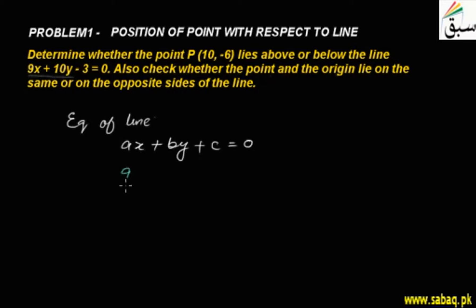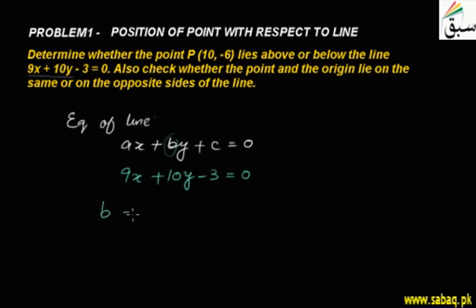The given equation is 9x + 10y - 3 = 0, which is in the same general form. Comparing coefficients, A = 9 and B = 10. The coefficient of y is positive.